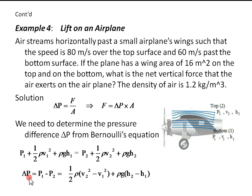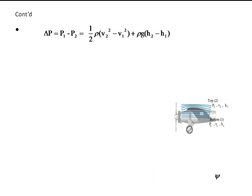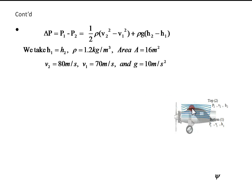Taking P2 to the other side, delta P, P1 minus P2, is half rho V2 squared minus V1 squared plus rho G H2 minus H1. In this expression, we take H1 equals H2 because the thickness of the wing is negligible, just like that of a horizontal pipe.